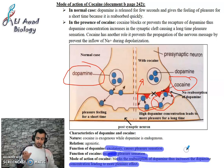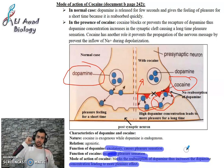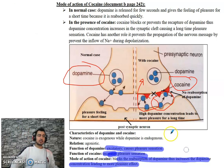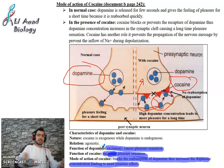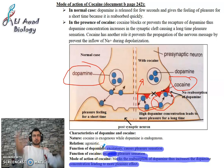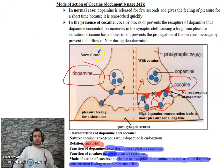Cocaine blocks the recapture of dopamine, preventing its reabsorption. This increases the concentration of dopamine, leading to more pleasure. This relationship — where cocaine enhances the effect of dopamine — is called an agonistic relationship.